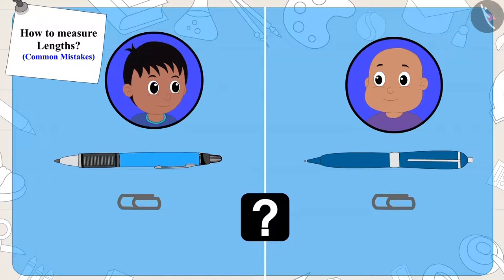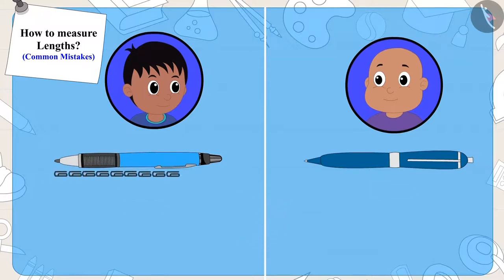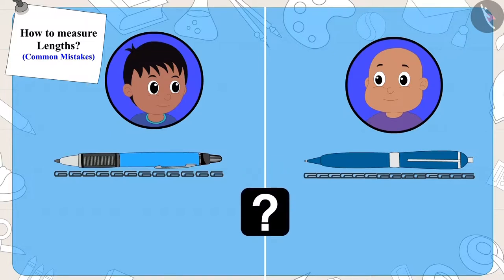Let's see how Raju and Bablu measured the length of their pens. Raju placed the clip in this way and Bablu in this way. Now, can you say where the mistake was?